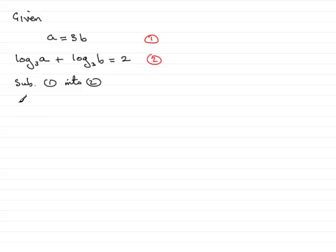So therefore, what we're going to have is that instead of log₃(a), it will be log₃(3b). So we have log₃(3b) plus log₃(b), and that equals 2.